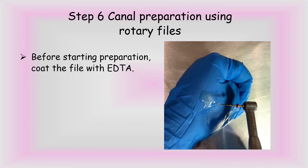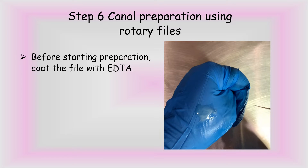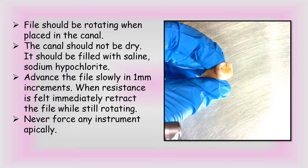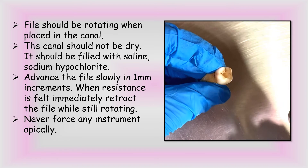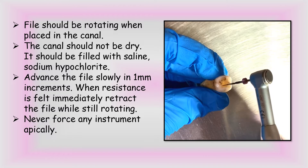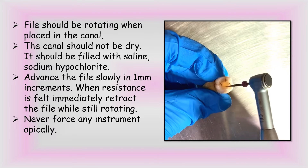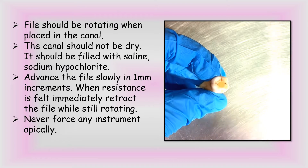The next step is canal preparation using rotary files. Before starting the preparation, we coat the file with EDTA, which acts as a lubricant and chelating agent in the root canals. It helps to remove calcifications and prevents breakage of rotary files. It is very important that the file should be rotating when placed in the canal. Also, the canal should not be dry — it should be filled with saline or sodium hypochlorite. Advance the file slowly in 1 mm increments, and whenever resistance is felt, immediately retract the file while it is still rotating. Never force any instrument apically.